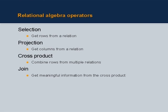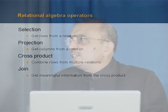Since cross product does not directly result in any meaningful information, you apply further selection and projection onto that cross-product table to extract only the meaningful information. That operation is called the join operation, and it is meant to get meaningful information from the cross product.